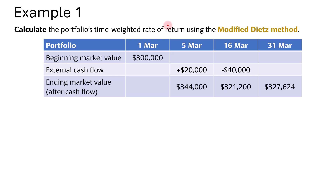For this example, we'll be using this portfolio with a beginning market value of $300,000 on the 1st of March and an ending market value of $327,624 on 31st March. On the 5th of March, there is an external cash flow of $20,000, which is a cash inflow, and on the 16th of March, there is a cash outflow of $40,000. We also have the ending market value after cash flow on the 5th and 16th of March, but we won't be needing this until we calculate the true time-weighted return.